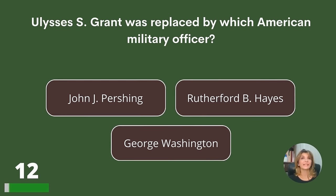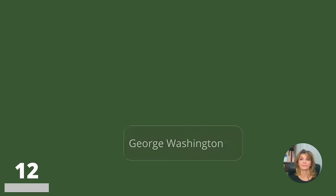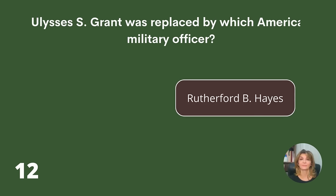Ulysses S. Grant was replaced by which American military officer? John J. Pershing, Rutherford B. Hayes, or George Washington? Answer: Rutherford B. Hayes.